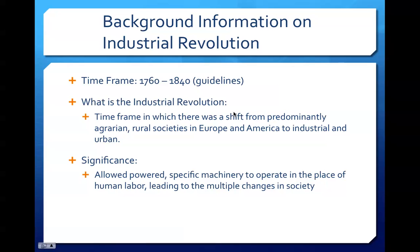Some background information on the Industrial Revolution: it is said to have started in 1760 and lasted until 1840. These are general guidelines, and different individuals have differing opinions on the dates. There is a discrepancy because of what we define the Industrial Revolution to be — a timeframe in which there is a shift from predominantly agrarian, rural societies in Europe and America to industrial and urban ones. This shift allowed powered, specific machinery to operate in place of human labor, and in essence, the Industrial Revolution is the bridge connecting modern technologies with the way of life of the colonial era.